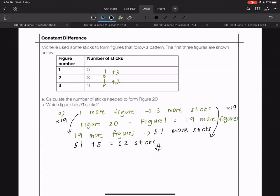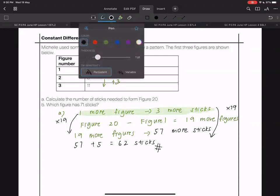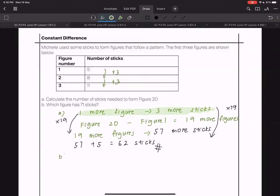For part A, using the same framework, which figure has 71 sticks? Let's use figure one as base. Which figure has 71 sticks? How many more sticks from figure one? In figure one we have five sticks.